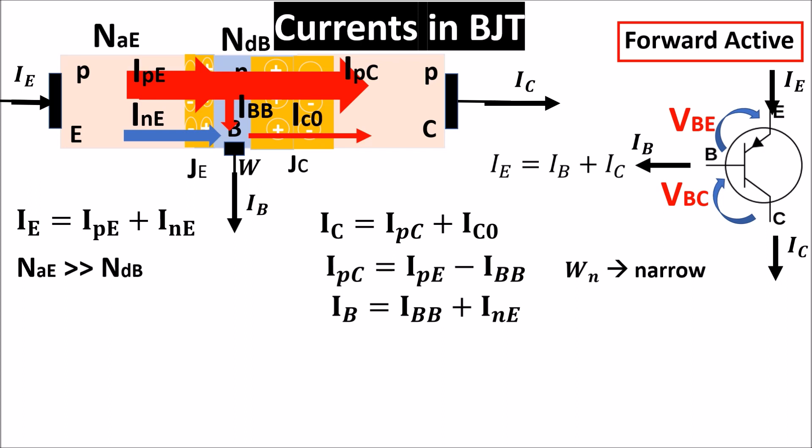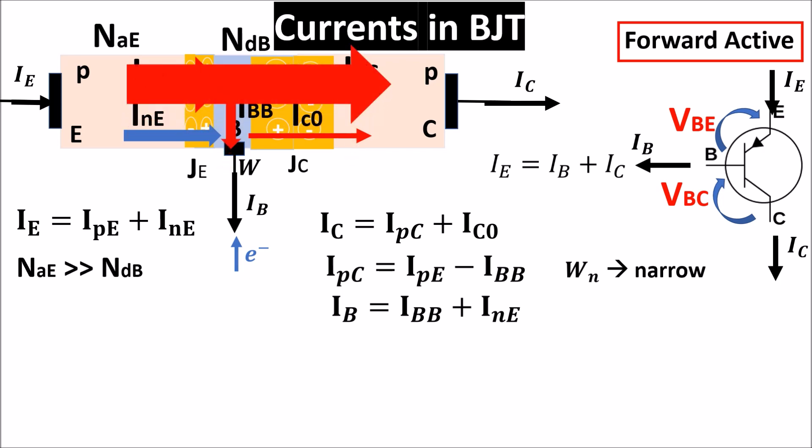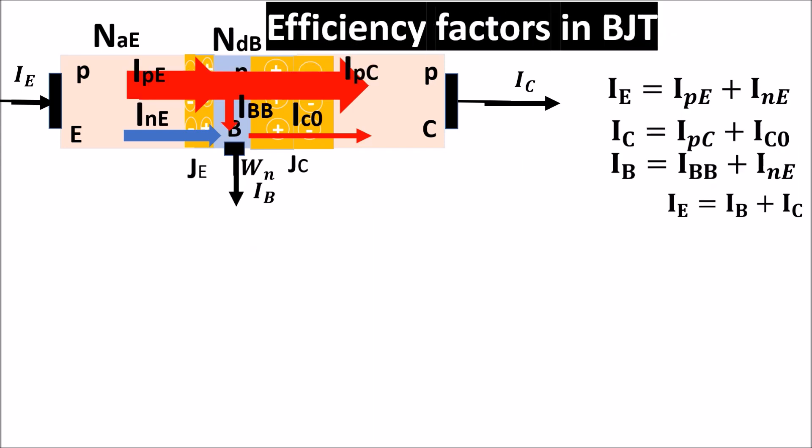We cannot avoid some recombination in the base, so IBB will not be zero. If for some reason we raise the base current by injecting more electrons into the base, IBB increases because more holes must come from the emitter for neutrality. But a small increase of IBB corresponds to a large increase of IPE, so we have an amplification effect. We thus have a device in which a small base current controls a large collector current.